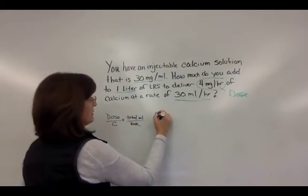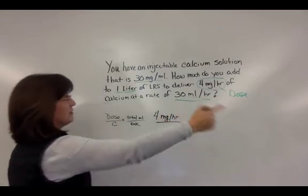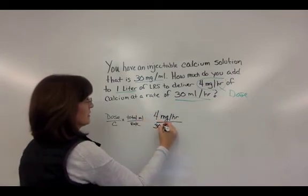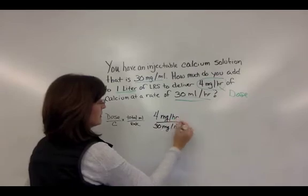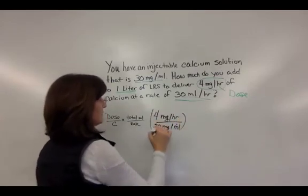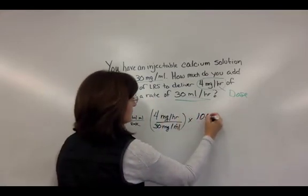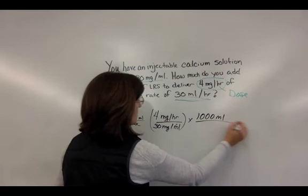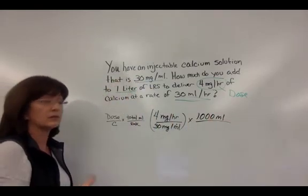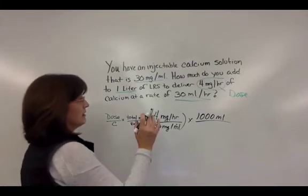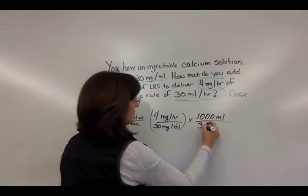It's just going to be dose divided by concentration, times total fluid volume over fluid rate. What we have is 4 mg/hour divided by the drug concentration of 30 mg/mL, times the total amount of fluid — 1,000 mLs. I always work in mLs so I don't have to convert, to avoid mistakes. The pump rate is 30 mLs per hour.